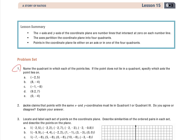Number 1, name the quadrant in which each of the points lies. If the point does not lie in a quadrant, specify which axis the point lies on. So the first thing I'm going to do to help me out with this is make a coordinate plane. I'm not going to number it all.